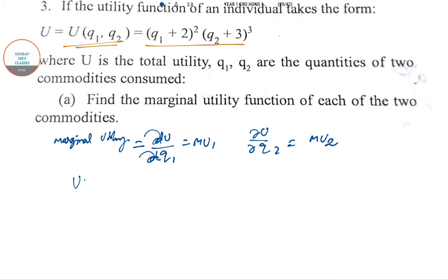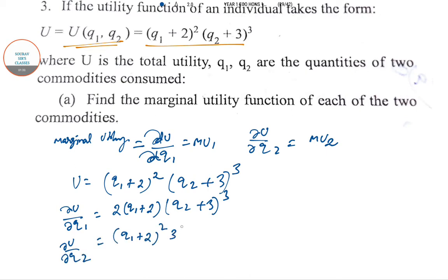So if you have any queries regarding the marginal utility calculation or partial derivative you can ask me for the videos. So ∂U/∂Q1 is 2(Q1 + 2)(Q2 + 3)² and ∂U/∂Q2 is 3(Q1 + 2)²(Q2 + 3)². So this is MU1 and this is MU2. These are the marginal utility functions of the two commodities.